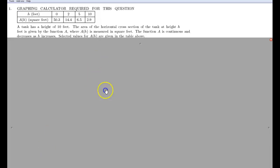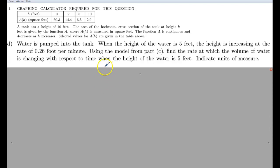On to part D. So water is pumped into the tank. When the height of the water is 5 feet, the height is increasing at the rate of 0.26 feet per minute. So here, when H is equal to 5, the height is increasing at 0.26 feet per minute. Using the model from part C, find the rate at which the volume of water is changing with respect to time when the height of the water is 5 feet. Indicate the units of measure again.